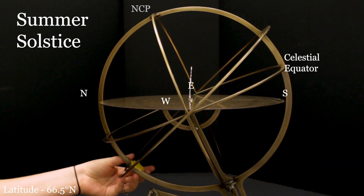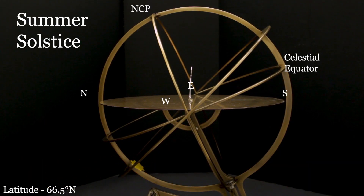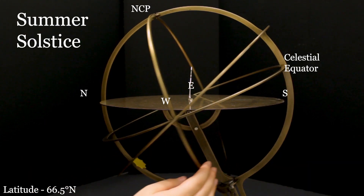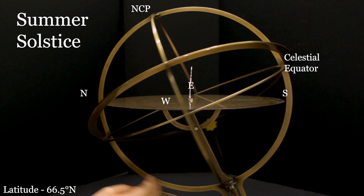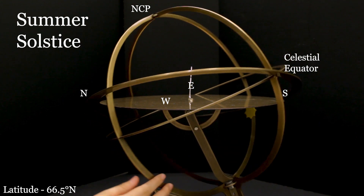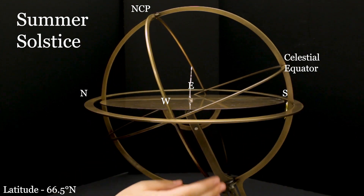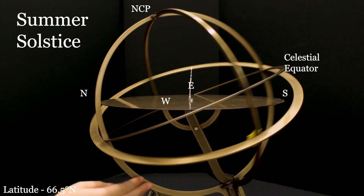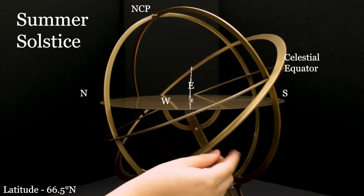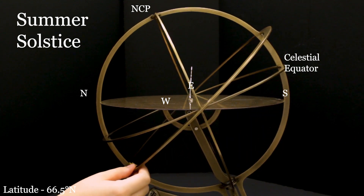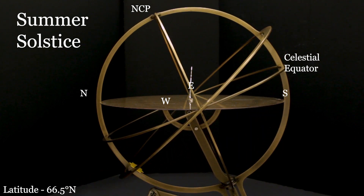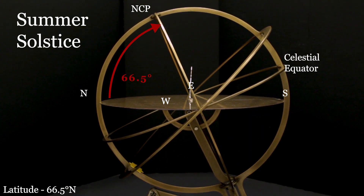The latitude of 66.5 degrees north is called the Arctic Circle. 66.5 degrees comes from the tilt of Earth's rotational axis — 23.5 degrees — such that 90 degrees minus 23.5 degrees equals 66.5 degrees.